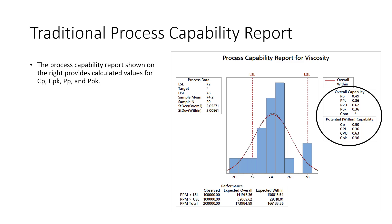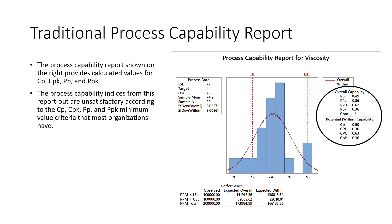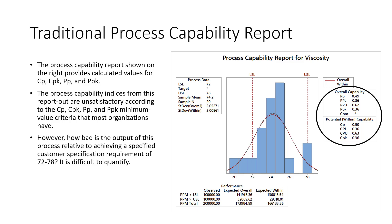If we did that, we would get this type of report out. You can see on the right-hand side of the slide the CP and CPK calculated values. Typically, an organization would say this process is not satisfactory relative to its output, in that the values for process capability indices are less than often 1.3 or 1.35 criteria. However, how bad is the output of this process relative to really achieving the customer specification limits of 72 to 78? Very difficult to quantify.